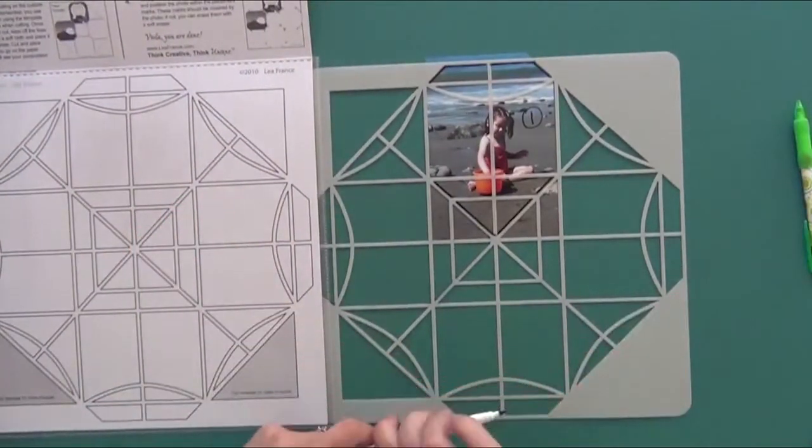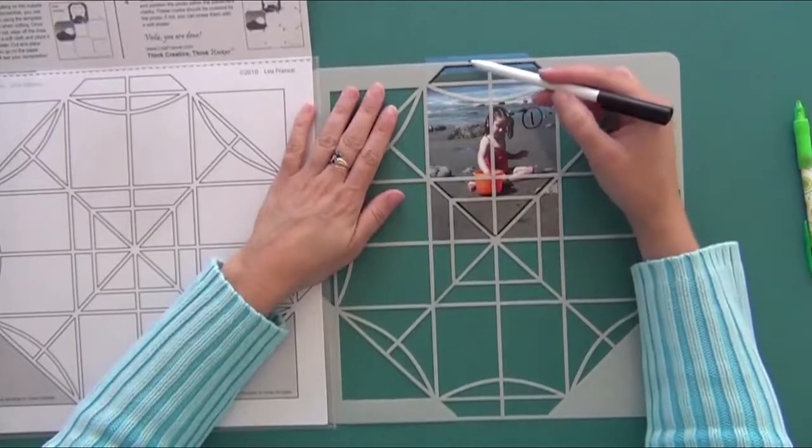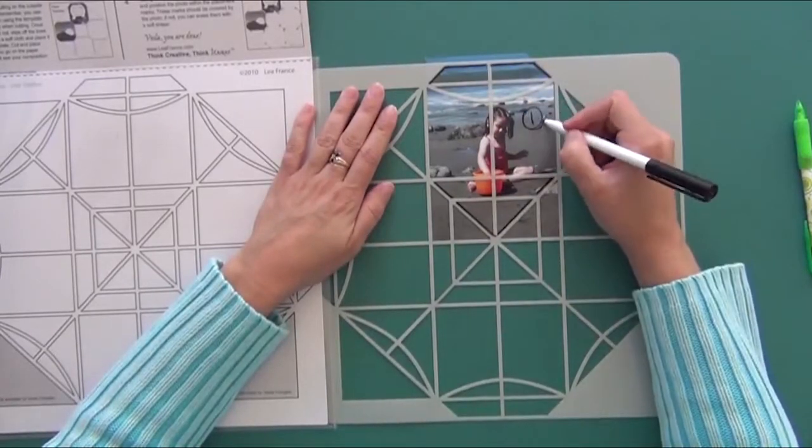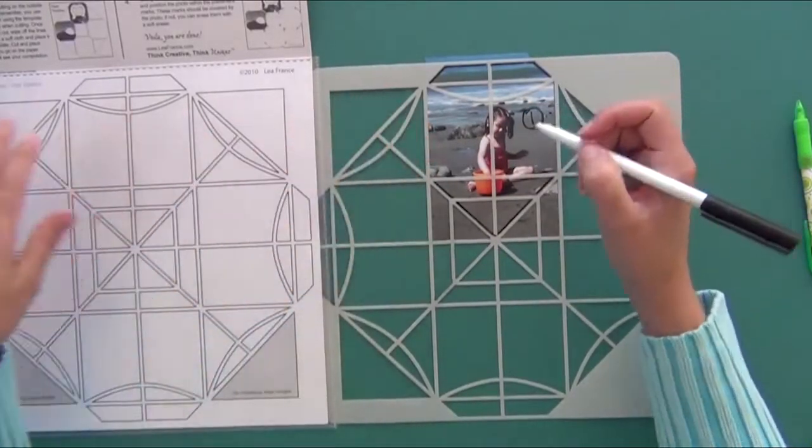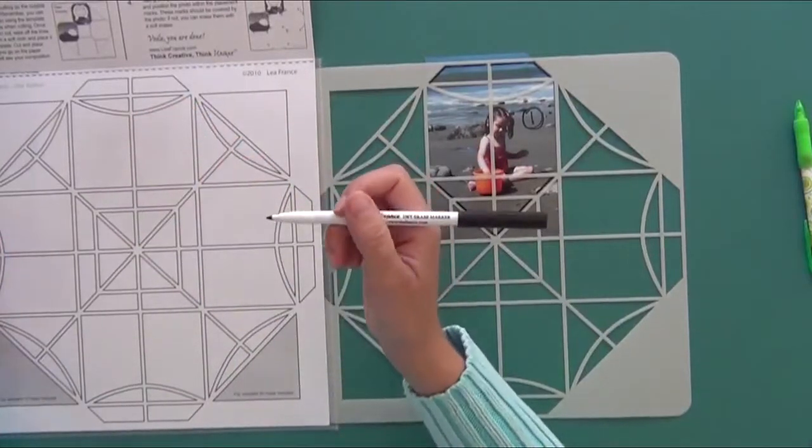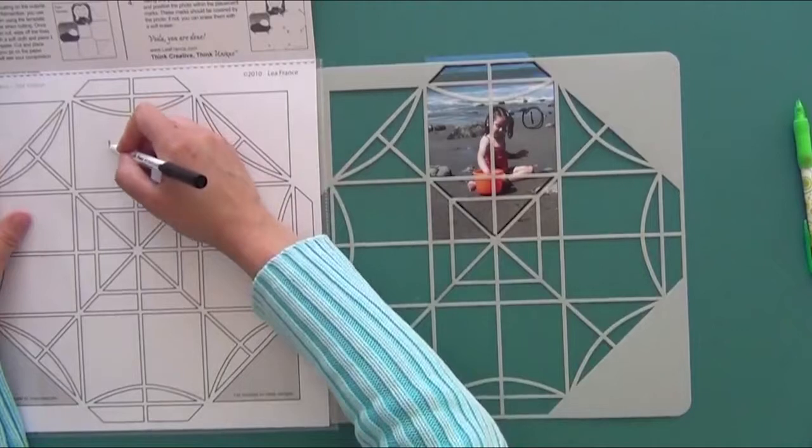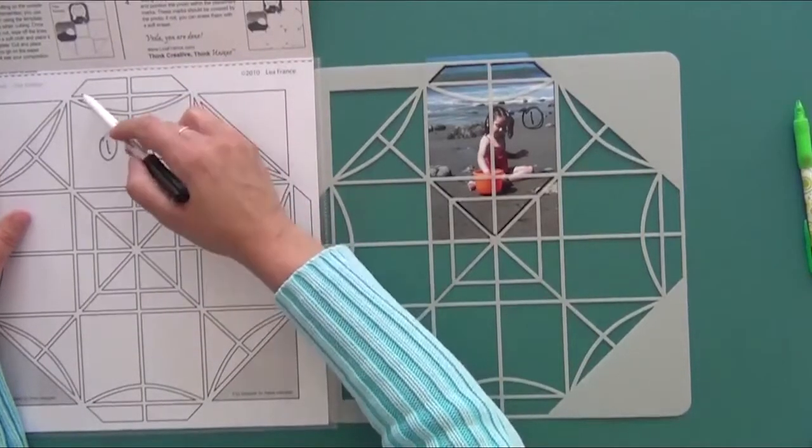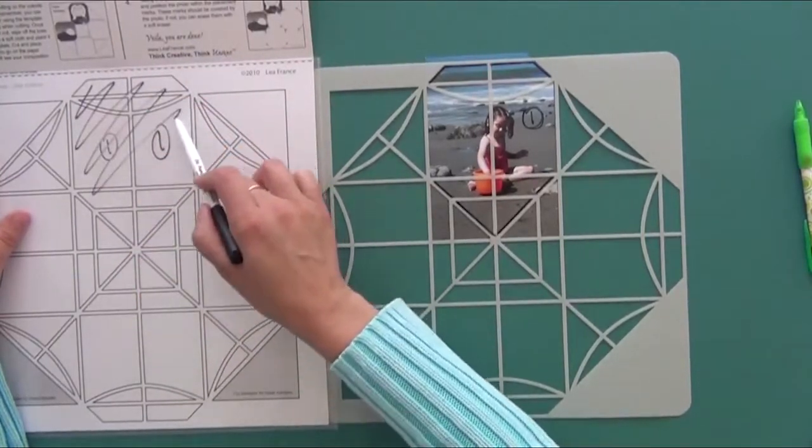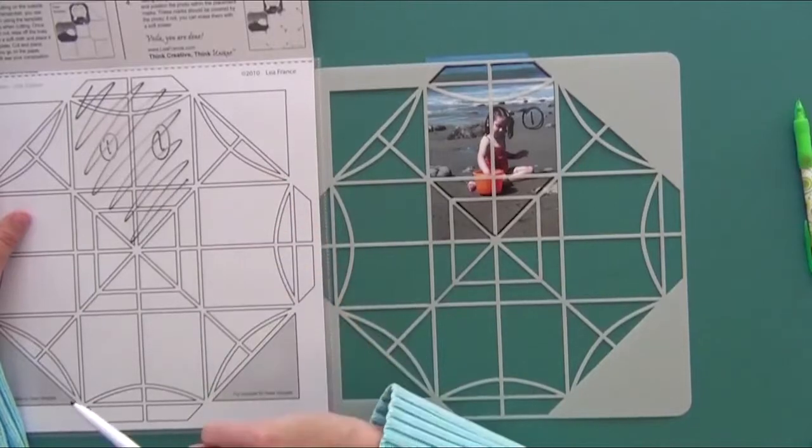Basically, I trace onto my photo and write number one on top of my photo. This time I don't have to grab a pencil. I just use the dry erase marker and write number one on the corresponding space.